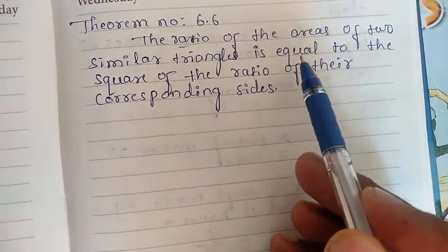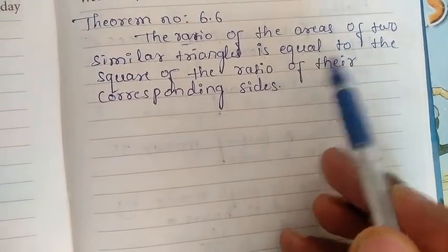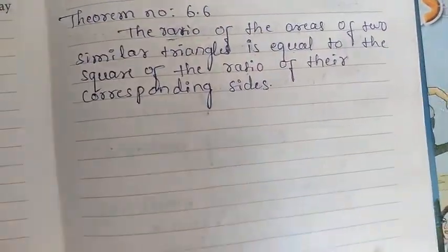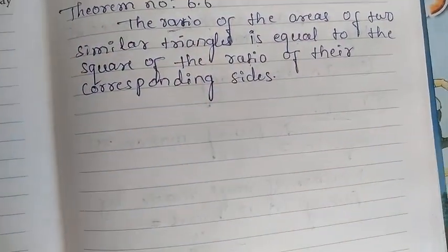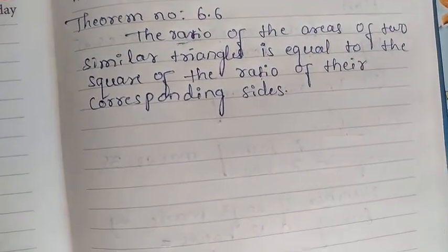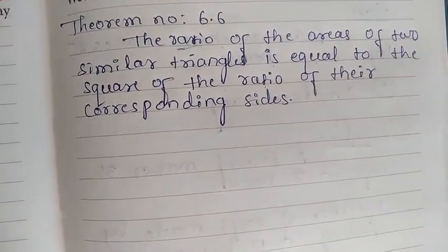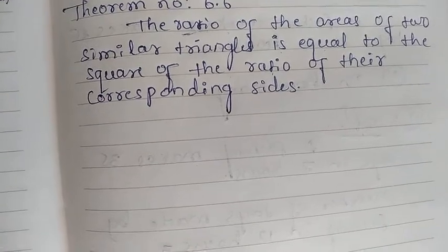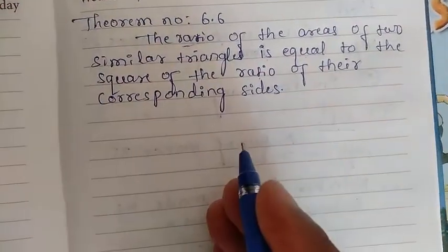See what they have given — it is equal to the square of the ratios of their corresponding sides. About the areas they have given here: the ratio of the areas of two similar triangles is equal to the square of the ratios of their corresponding sides. Now I will draw the diagram, then you will get the idea.